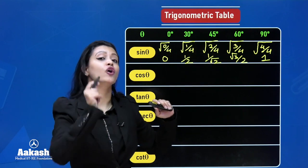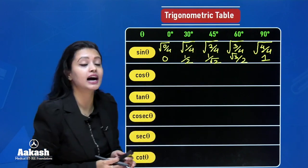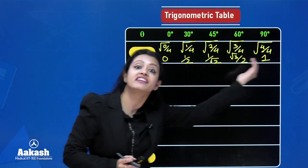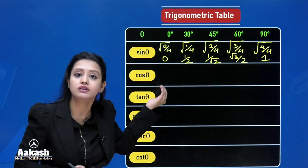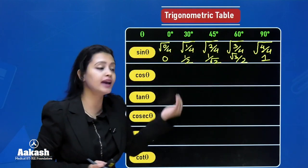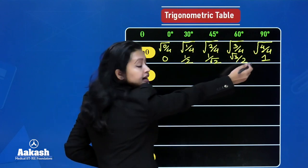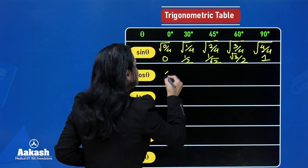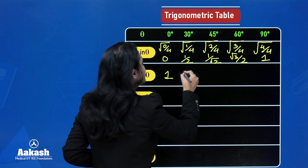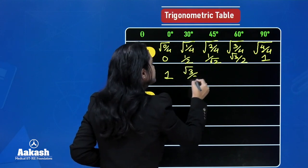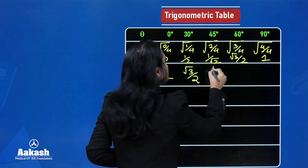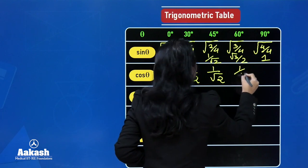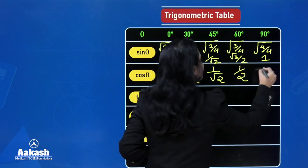For cos theta, you write the same values but in reverse order: 1, √3/2, 1/√2, 1/2, and 0 for 0°, 30°, 45°, 60°, and 90° respectively.